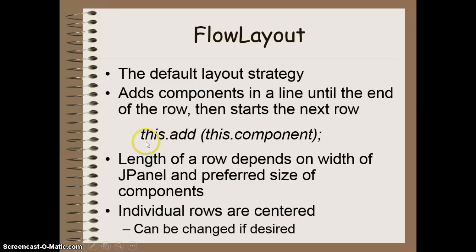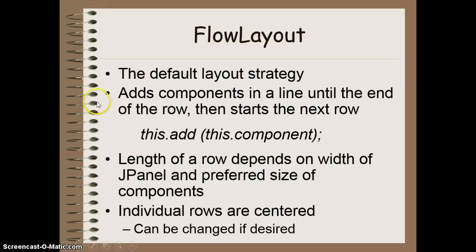We add components using this.add, with this being the panel and the argument being the component. The number of components that fit in a row depends on the size of each component — the wider the component, the fewer fit on a row. Each individual row is centered in the panel by default. However, you can change this to left or right aligned using the set alignment method or a different constructor for Flow Layout that accepts an alignment argument.